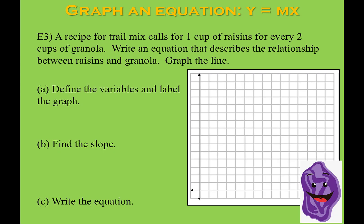Here we have a recipe for trail mix that calls for one cup of raisins for every two cups of granola. Write an equation that describes the relationship between the raisins and the granola, then graph that line. Whenever dealing with a word problem, you want to define your variables first. We have cups of raisins and cups of granola as our two variables. Let's say x is going to be the cups of raisins and y is going to be the cups of granola. If you wanted to flip it, you could, but the relationship expressed would still be the same.